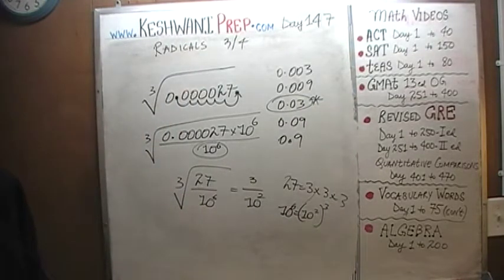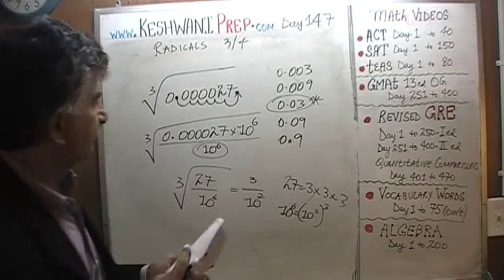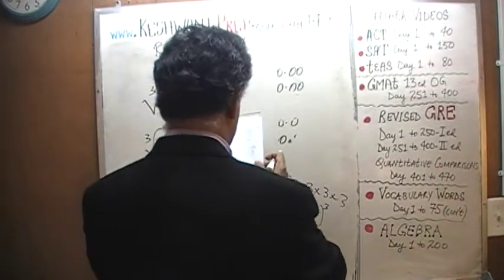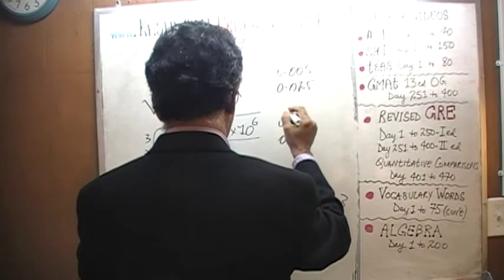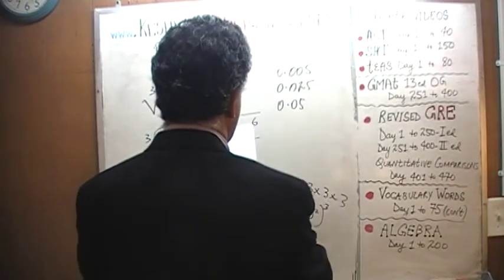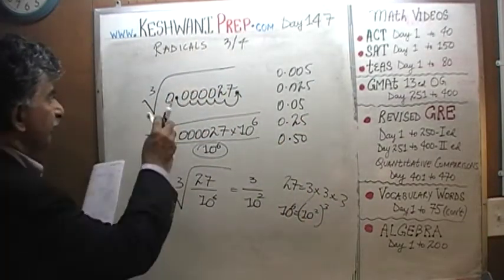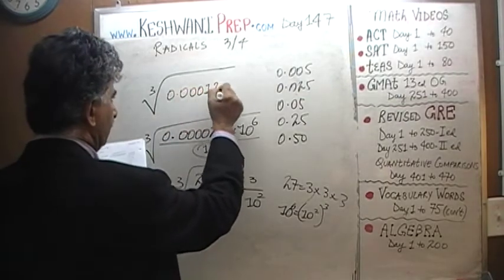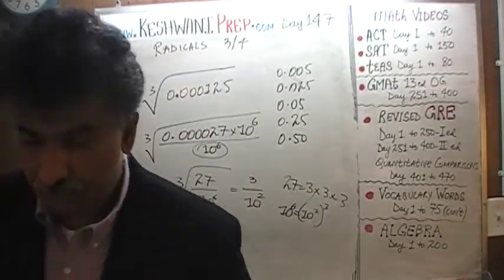Let's do one more — the same idea will apply. Here are the answer choices for the next problem: 0.005, 0.025, 0.05, 0.25, and 0.50. The problem is: find the cube root of 0.000125. Do it yourself — same logic, same rationale, same method. Nothing has changed; just follow the same steps.